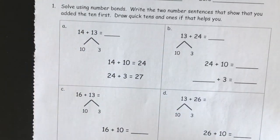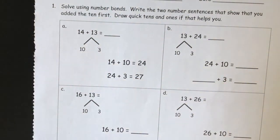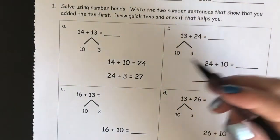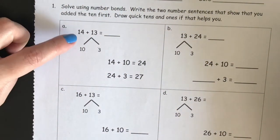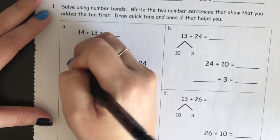I will show you how to do the first two sentences that show that you added the tens first, and then do a quick ten and one drawing if that helps you. If it's helpful, you can have manipulatives next to you and build the number sentences, or you can also draw quick ten drawings to help you.